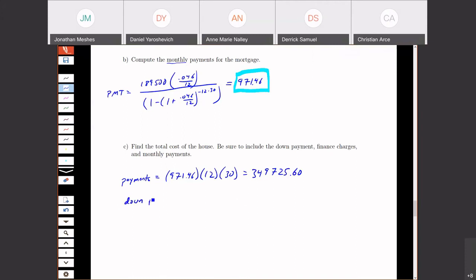Our down payment, if I look back, was $10,500. And our fees that we had to pay was $4,500. So if I add up these three numbers to get my total cost, I get $364,725.60.